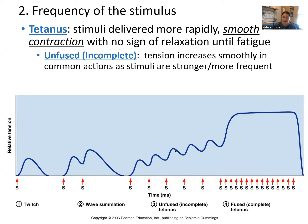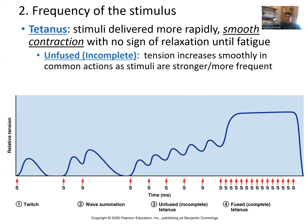In unfused or incomplete tetanus, we can see that there are little peaks, but what you would experience is just the tension increasing smoothly, stronger and stronger. You can think of holding a cup — as you pour water into the cup, the cup gets heavier, and so your muscles have to produce more and more tension to hold the cup in the same place. Unfused or incomplete tetanus would be occurring there. My muscles right now, holding this book, are completing unfused tetanus — to have the strength to hold up the book for more than just a millisecond, this unfused tetanus is required to make that happen.